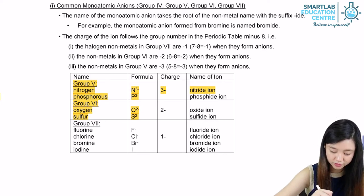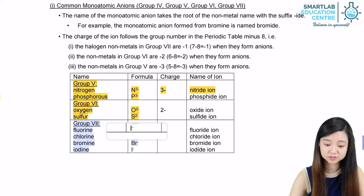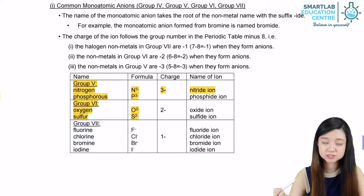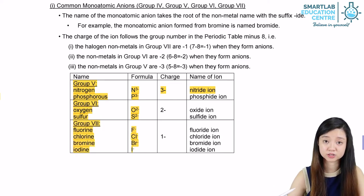For group 7, elements already have 7 outermost electrons, so they just need to gain 1 more electron, giving them a 1- charge.